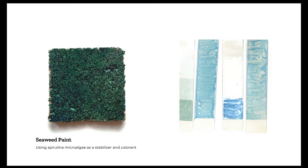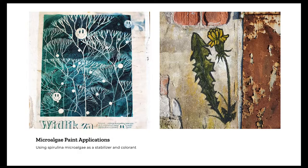I found that by adding microalgae to the paint mixture it actually stabilized the paint and also added brilliant blues and greens from the microalgae I was using. I further developed different seaweed paint ratios using the seaweed as a glue for the base, coming up with different stains with the microalgae and different formulaic compounds. On the left here we have a stain from the seaweed paint.